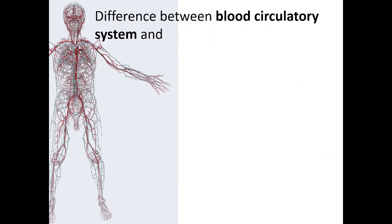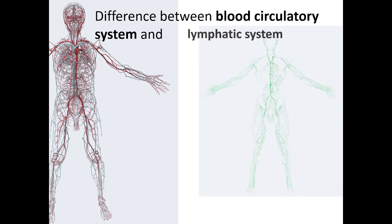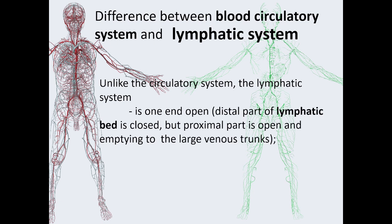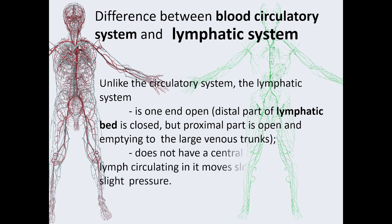Difference between the blood circulatory system and the lymphatic system. Unlike the circulatory system, the lymphatic system is open. The distal part of the lymphatic system is closed, but the proximal part is open and empties into the large venous trunks. Second, the lymphatic system doesn't have a central pump. The lymph circulating in it moves slowly and under slight pressure.